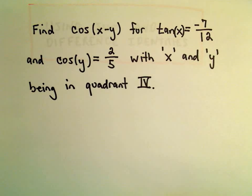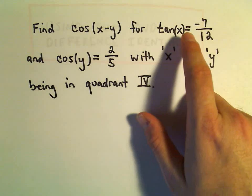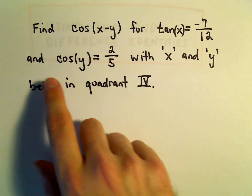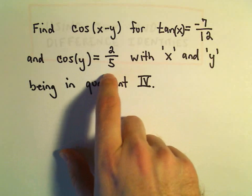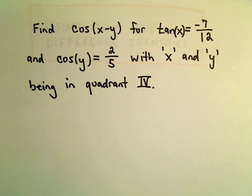Suppose we want to find the value of cosine of x minus y. We're given that tangent of x equals negative 7 over 12, cosine of y equals 2 over 5, and we know that x and y are both in quadrant 4.